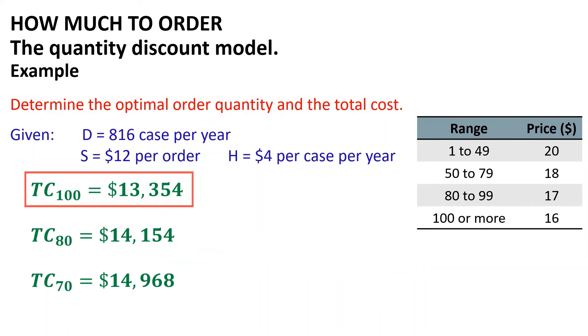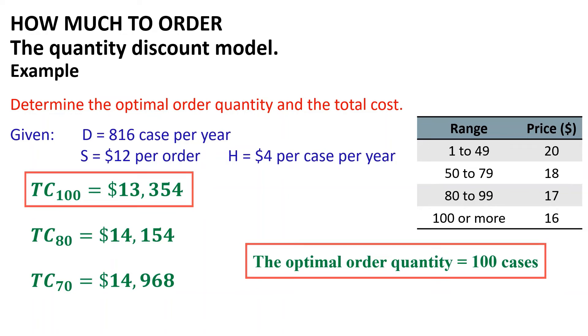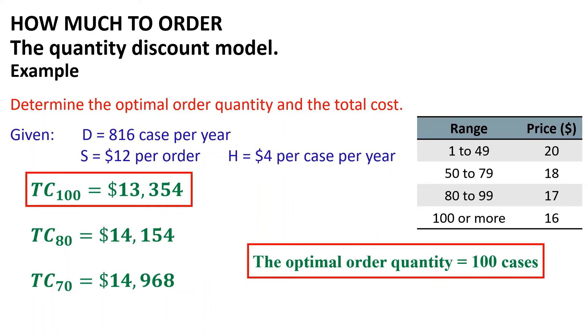Because 100 cases per order yields the lowest total cost, ordering a quantity of 100 cases per order is the overall optimal order quantity, and the corresponding total cost is $13,354.